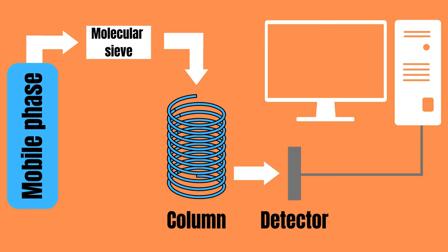So how is gas chromatography carried out? First the sample is introduced into the gas chromatograph right before the column, often using a syringe.